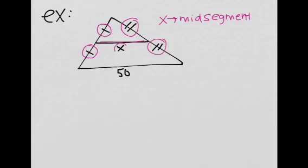So we know that x is half the base, so base divided by 2. We see that the base is 50, so x is equal to 50 divided by 2, which is equal to 25.